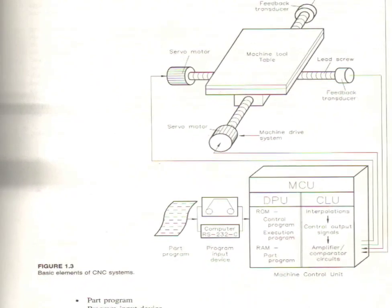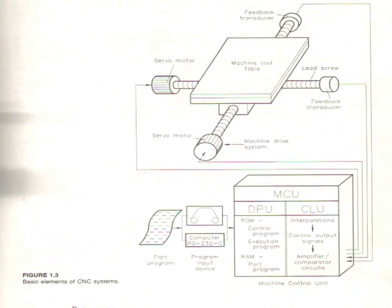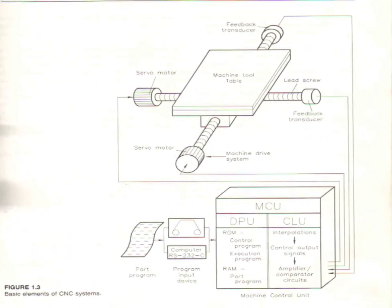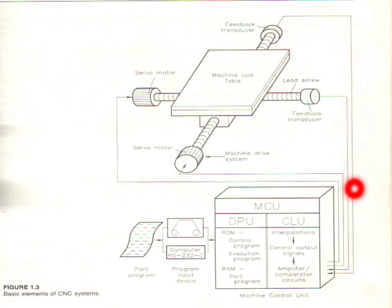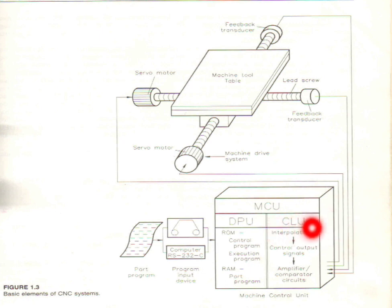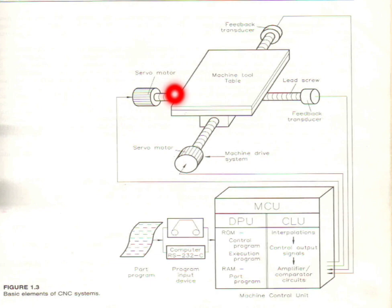To know the new position of the machine tool, feedbacks are used. The feedback signals from the machine tool are sent to the MCU, and then the MCU tells the servo motor to perform the specific function.